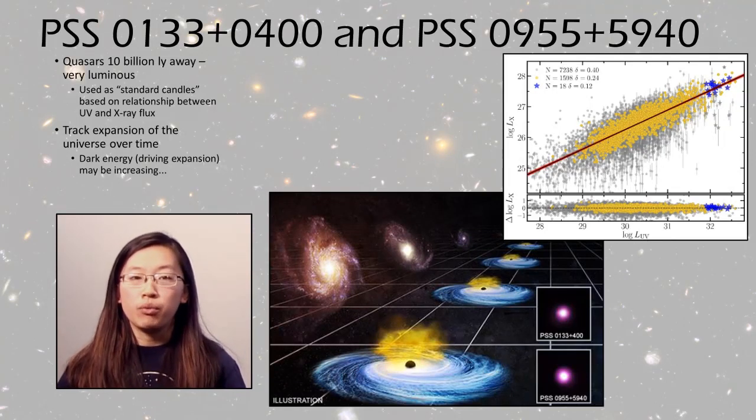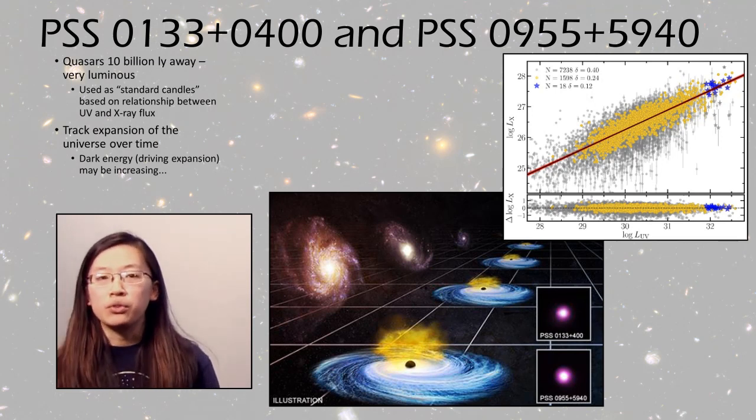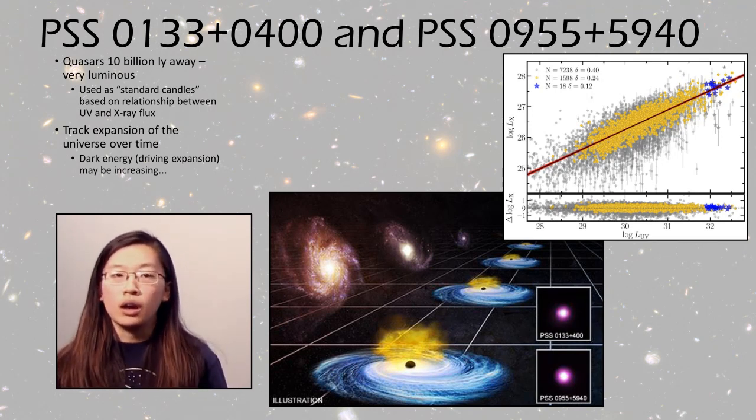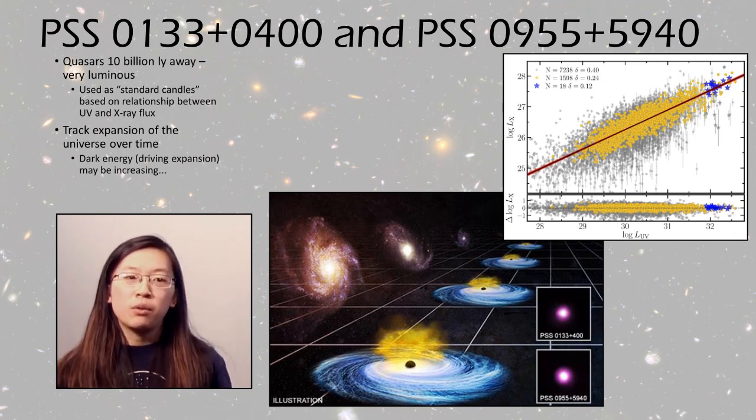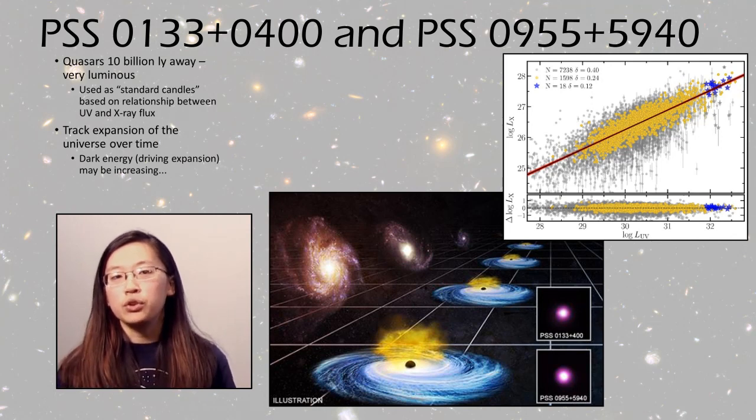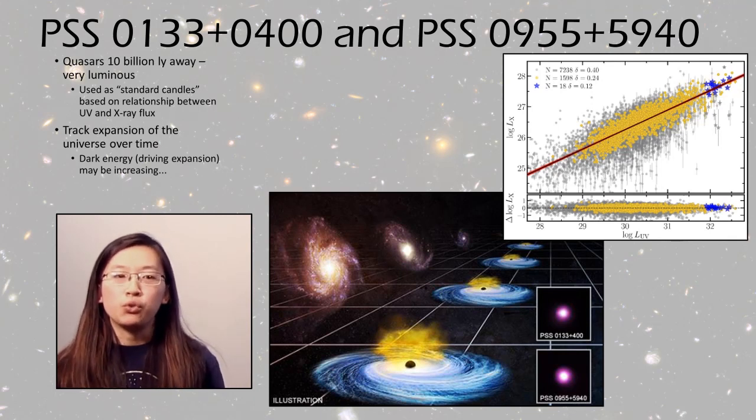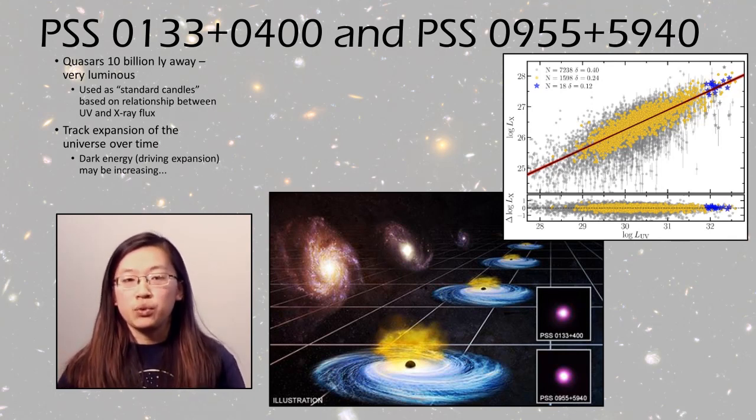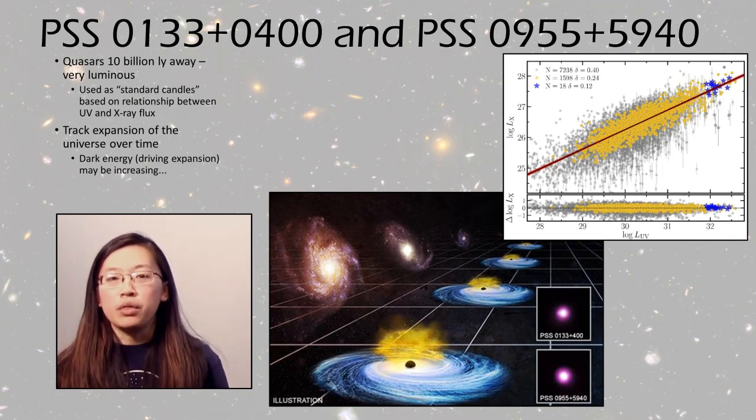Next we have PSS 0133 and 0955. So these are two quasars about 10 billion light-years away. As you know, quasars are very, very bright, and so they can be seen from very, very far distances. And wouldn't it be great if you could use these as standard candles? And it turns out you can. There's a relationship between the UV and the x-ray flux of these quasars, and from that we can determine their distances.